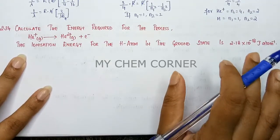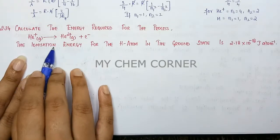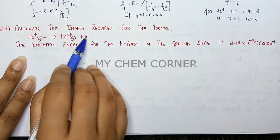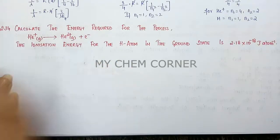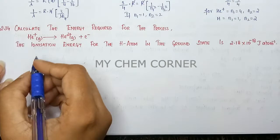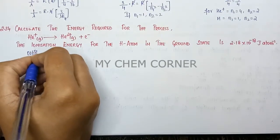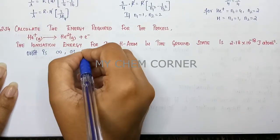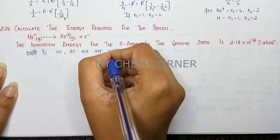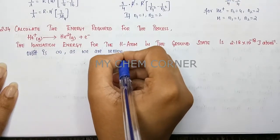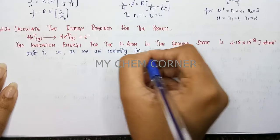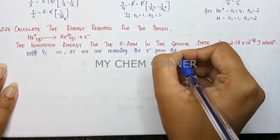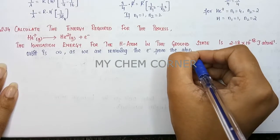Let's see what we're doing. In this case, we're trying to remove an electron from the entire atom, which means the orbit becomes infinite. Why? Because we are removing the electron from the atom completely.